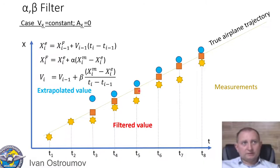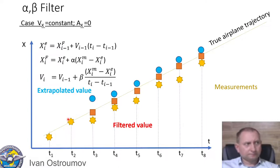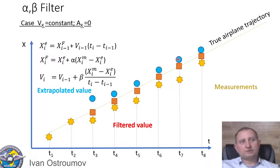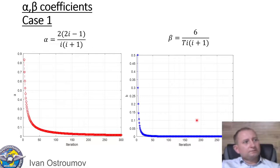For the first two steps of filtering, we cannot do full filtering yet. At the first step we just get the measured value and hold it for further consideration. At the second step we can only estimate the velocity of the airplane. Beginning from the third step we start filtering, building the extrapolation-filtering loop and continuing extrapolation and filtering alternately.